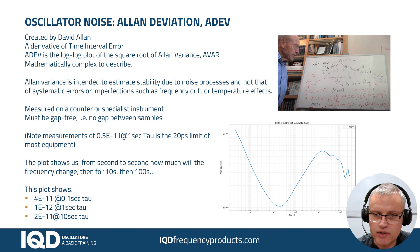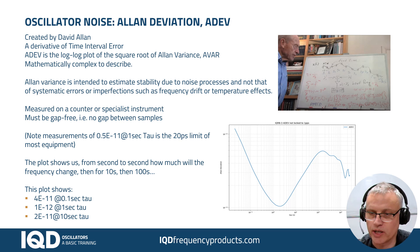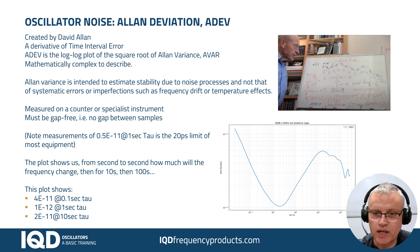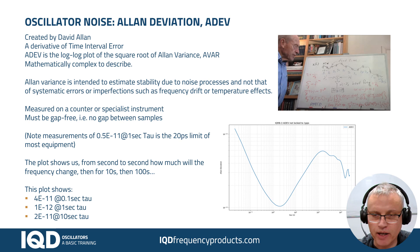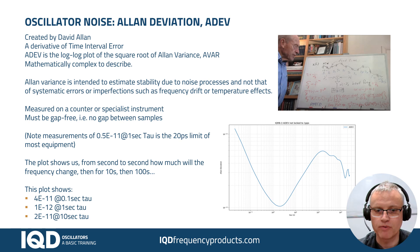The plot on the bottom right is an Allan Deviation measurement taken from one of our oscillators. As we said, this is a log-log plot, so along the bottom we're looking at time: 0.1 of a second, 1 second, 10 seconds, 100 seconds, 1000 seconds. The number we're reading off on the y-axis doesn't equate to some electrical or directly measurable quantity — it's a value you can compare to another Allan Deviation plot from another oscillator and say this one is better than that one. So it's a very useful metric when comparing oscillators. Thank you.